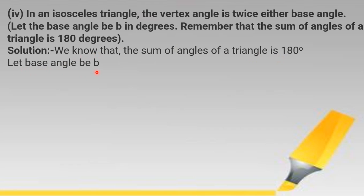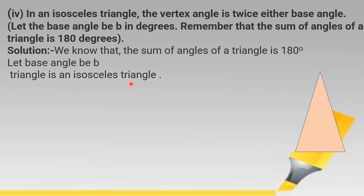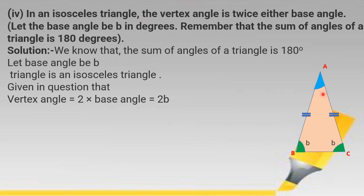The base angle is taken as variable B. In an isosceles triangle, two sides are equal in measure. Let the three vertices be A, B, and C, where sides AB and AC are equal. The vertex angle is A and the base angles are B and C. Since the vertex angle is twice either base angle, vertex angle equals 2B.